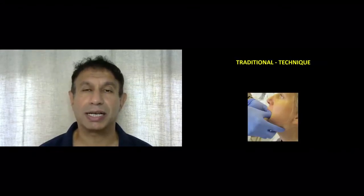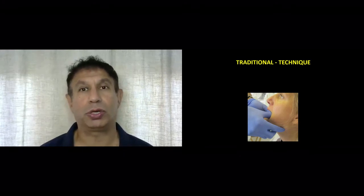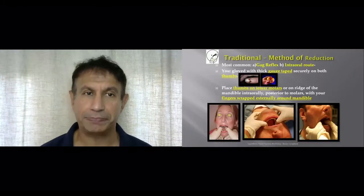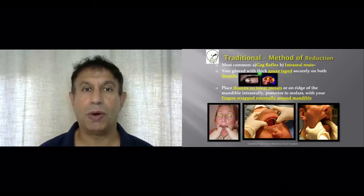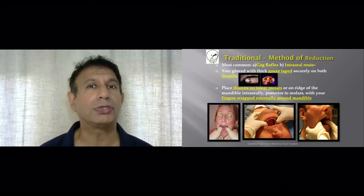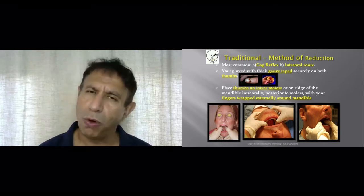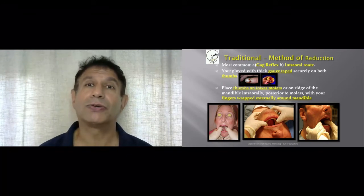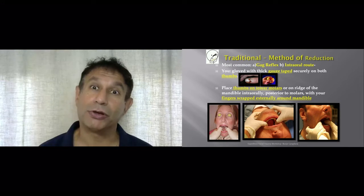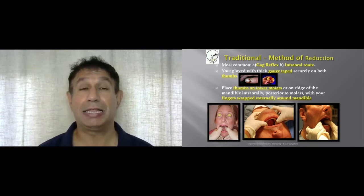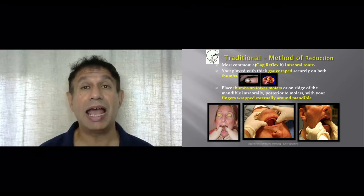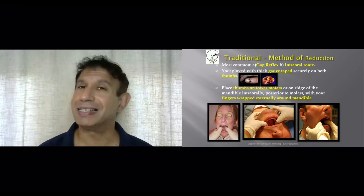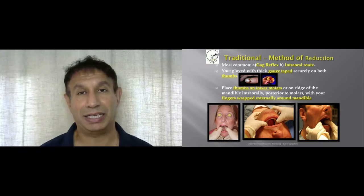We are only going to discuss anterior atraumatic jaw joint dislocation. The first technique is the traditional technique. One traditional method is the gag reflex: you take any object such as cotton or cloth and irritate the soft palate, causing a gagging sensation that may reduce the dislocated jaw joint. However, statistically and historically it has a very poor success rate.